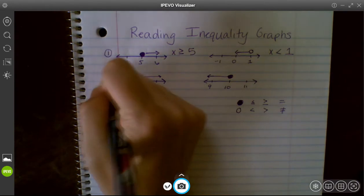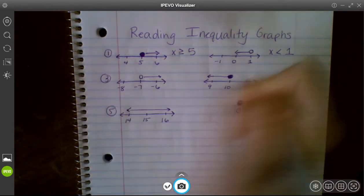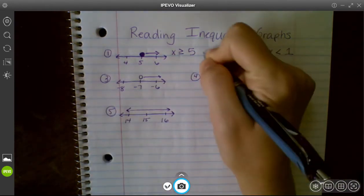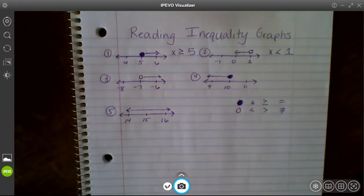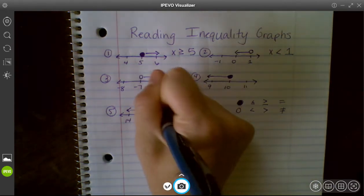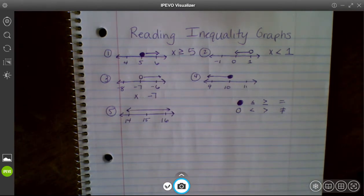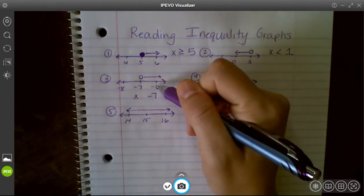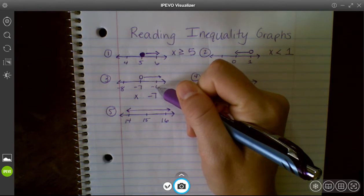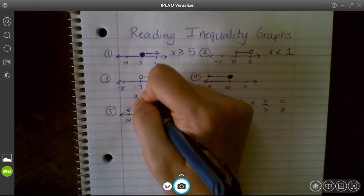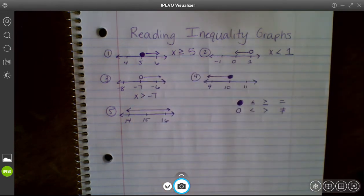So in my third, I have a circle at negative 7. So negative 7, x, no equal to, because it's not colored in, and then it goes to 6, and this is negative 6. So even though it looks like it's getting smaller, it's negative, so really x is greater than negative 7.